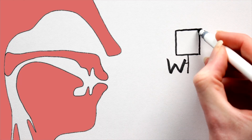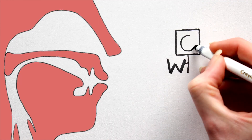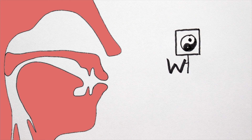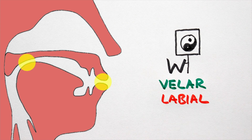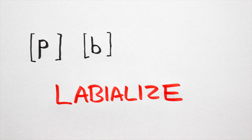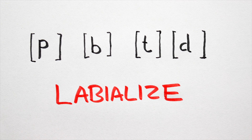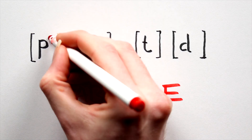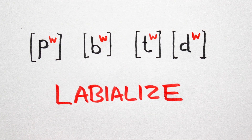The TL;DR here is that the English W sound occurs in two places at once — it's a velar approximant, but at the same time it's also labialized, hence co-articulated. A further interesting side note is that theoretically we can labialize any sound with a superscript W after the relevant IPA symbol. So 'pa', 'ba', 'tha', and 'da', for example, would become labialized versions: 'pw', 'bw', 'tw', and 'dw'.